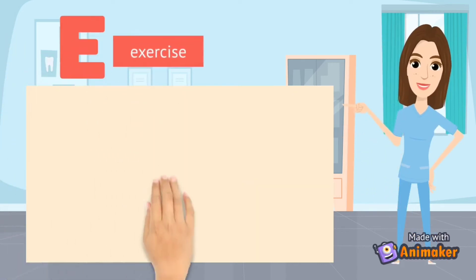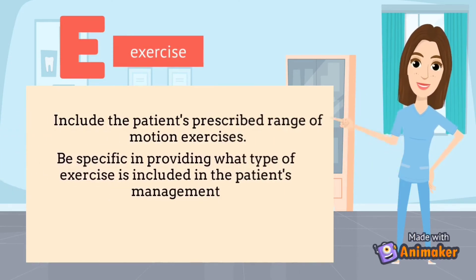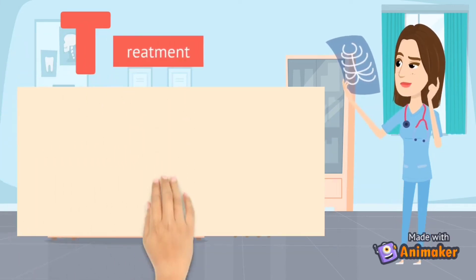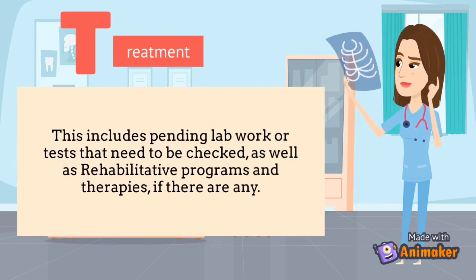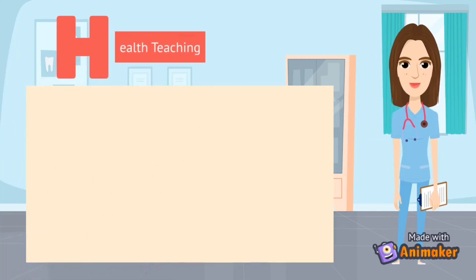E stands for exercise — include the patient's prescribed range of motion exercises. Be specific in providing what type of exercise is included in the patient's management, whether passive or active range of motion. T stands for treatment — this includes pending lab works or tests that need to be checked, as well as rehabilitative programs and therapies if there are any.